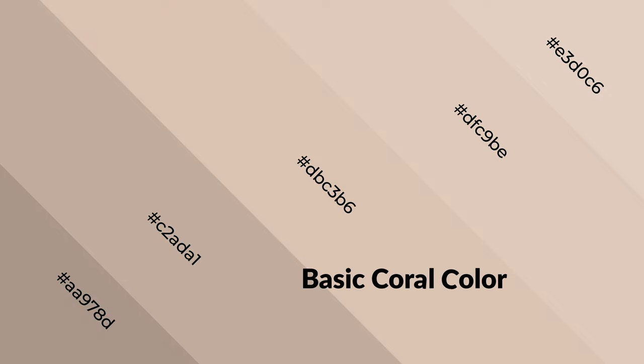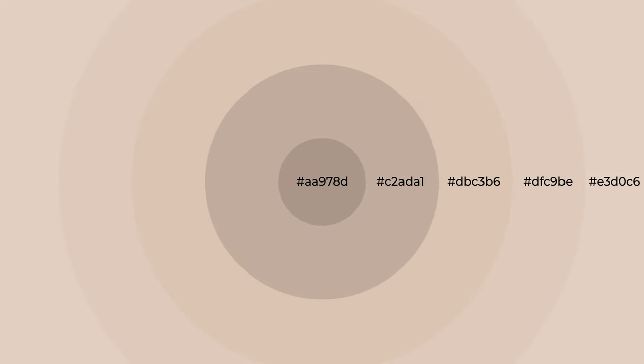Warm colors are symbols of warmth, fire, heat, and sunshine. Coral also evokes joy, passion, love, and even anger emotions. You can see them used in restaurants and gyms.